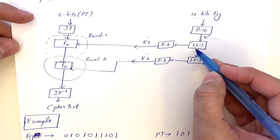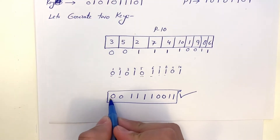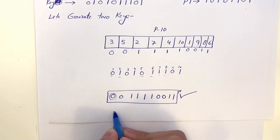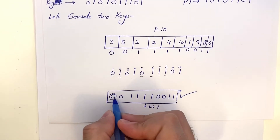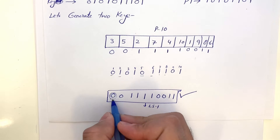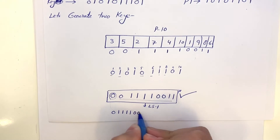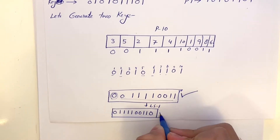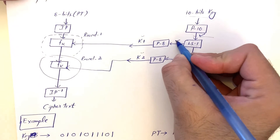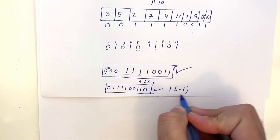Next is LS1 — left shift 1. The bit on the extreme left side is moved to the extreme right. So the 10-bit permuted data 0011110011 becomes 0111100110 after LS1 — the leading 0 moves to the end. This is our LS1 output, which we now pass through P8.